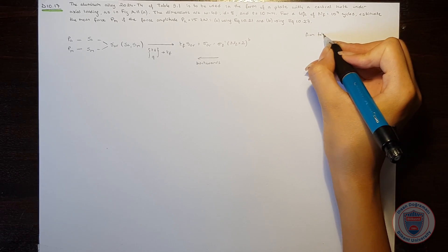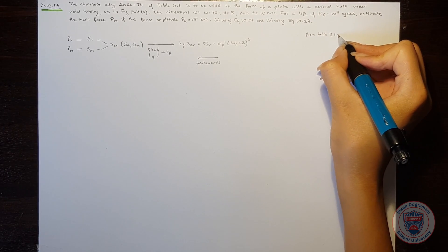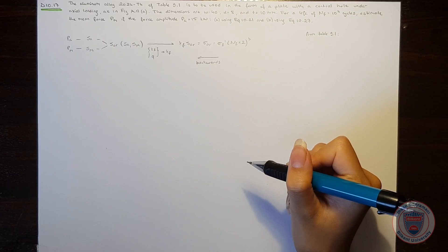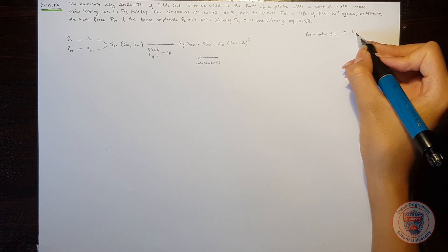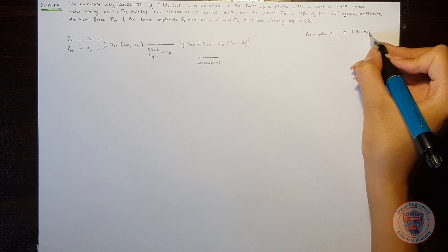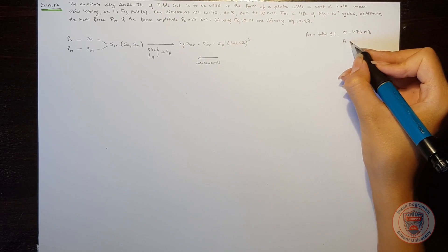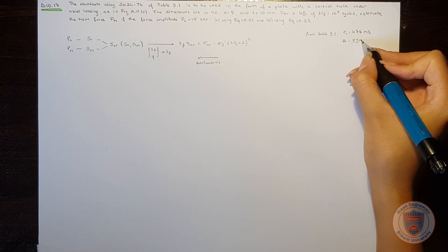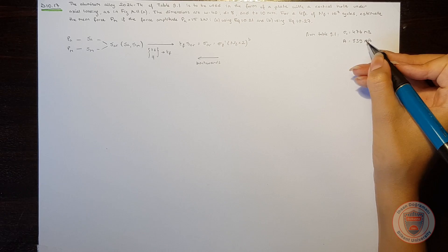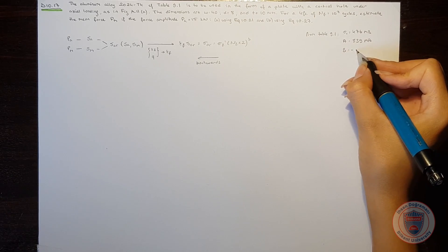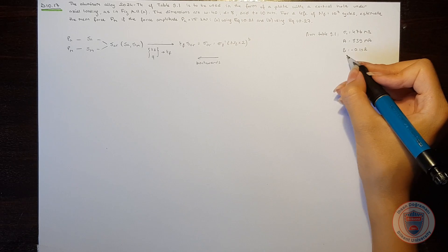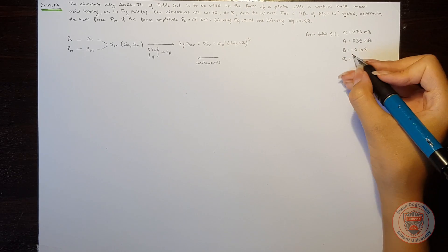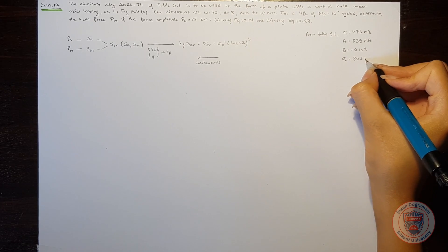From table 9.1, for this aluminum alloy, the ultimate tensile strength is equal to 476 MPa. A is equal to 839 MPa, B is minus 0.102, and the yield strength is equal to 303 MPa.